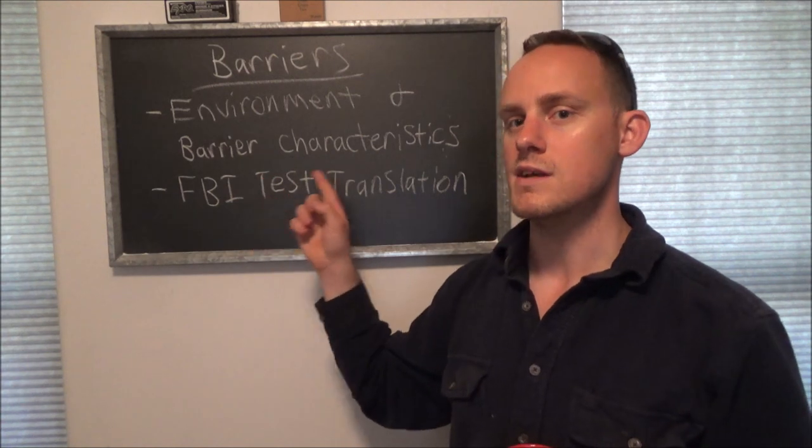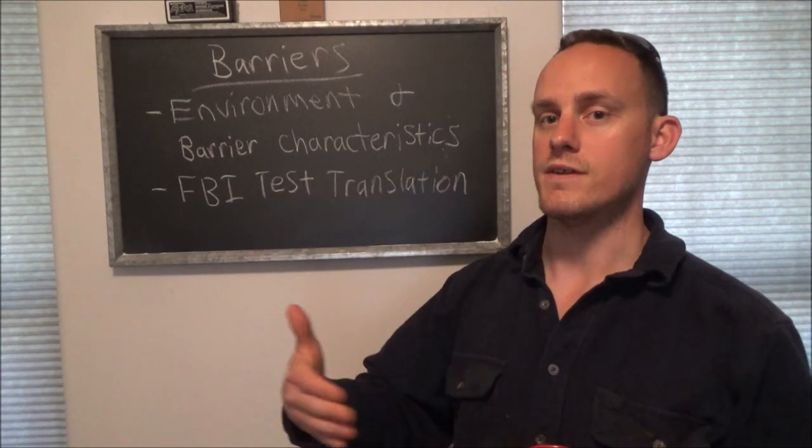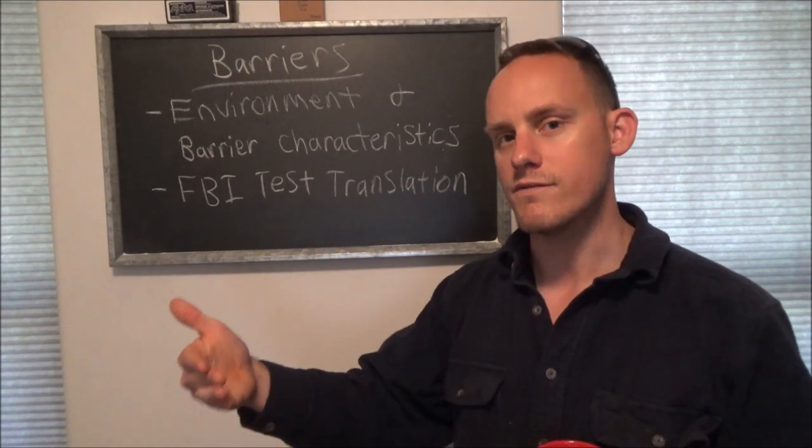So I need to understand those barriers, the materials, and the characteristics they're going to have. And basically, the characteristics means the effect they're going to have on the bullet.